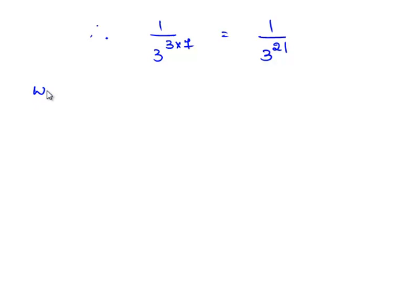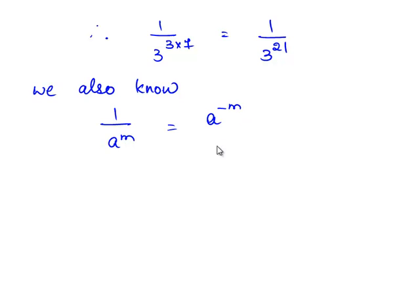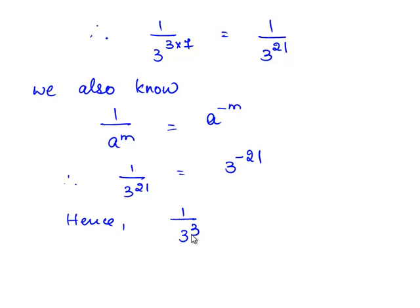As we also know, 1 by a power m can be written as a power minus m from the law of exponents. Therefore, 1 by 3 power 21 is written as 3 power minus 21. Hence, 1 by 3 raised to the power of 3 whole raised to the power of 7 is equal to 3 power minus 21.